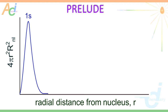The Radial Probability Distribution Curve for the 1s orbital is as shown on the screen. This curve has a peak point at which the probability of finding the 1s electron is maximum. It is interesting to note that the radial distance at this point is equal to the Bohr's radius of the 1st orbit of hydrogen atom. One should also note that the probability function has a value of 0 at the nucleus.